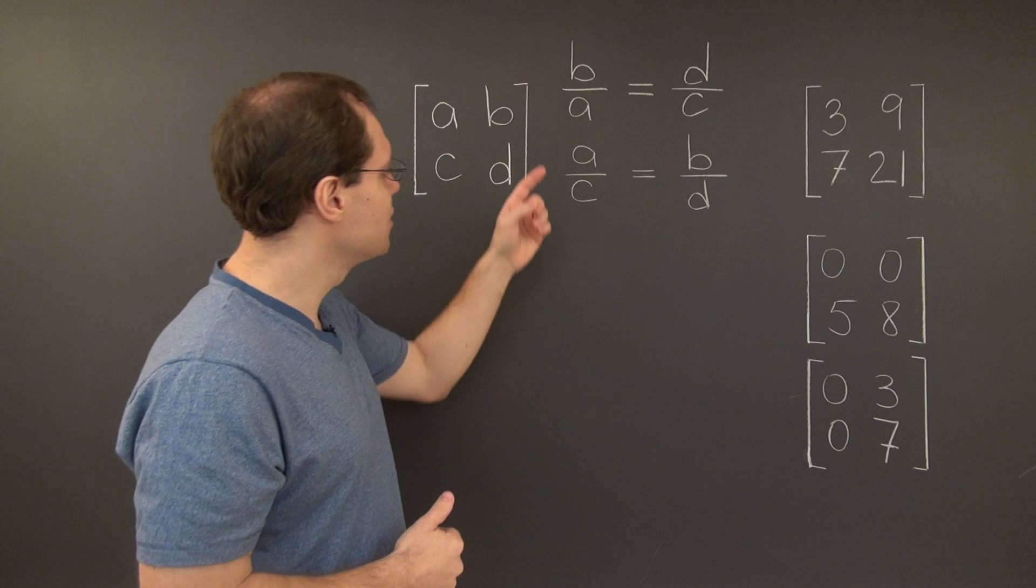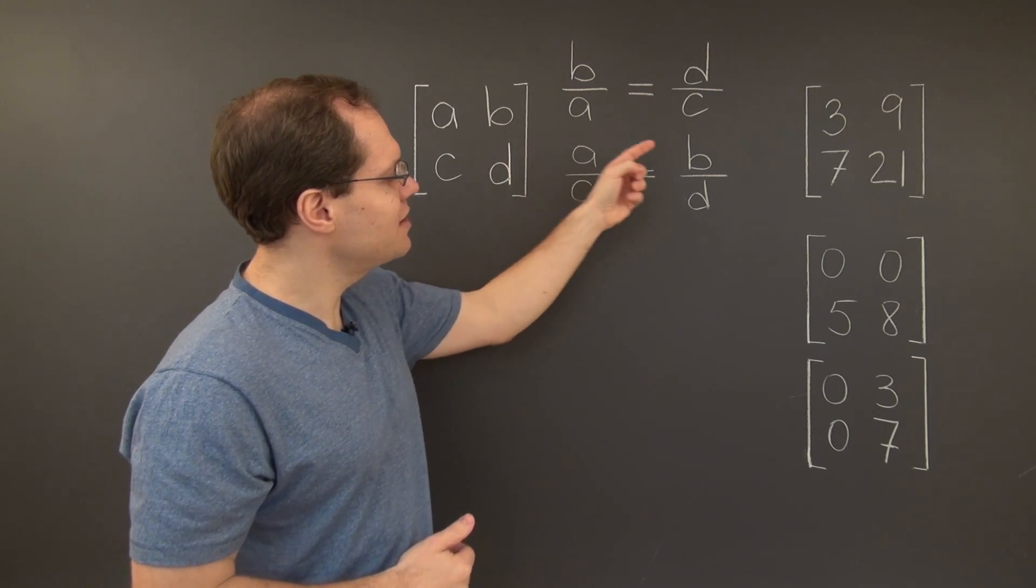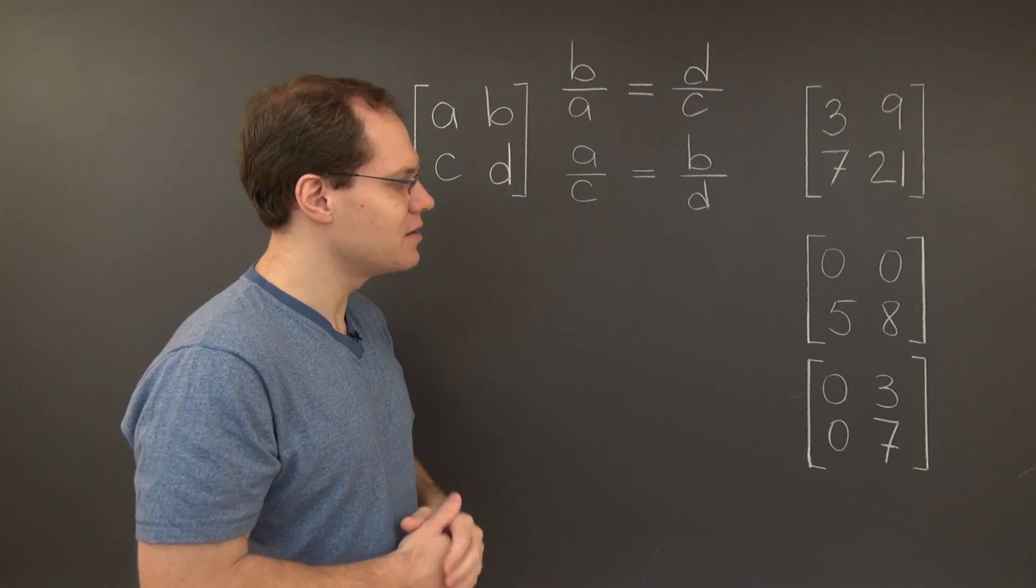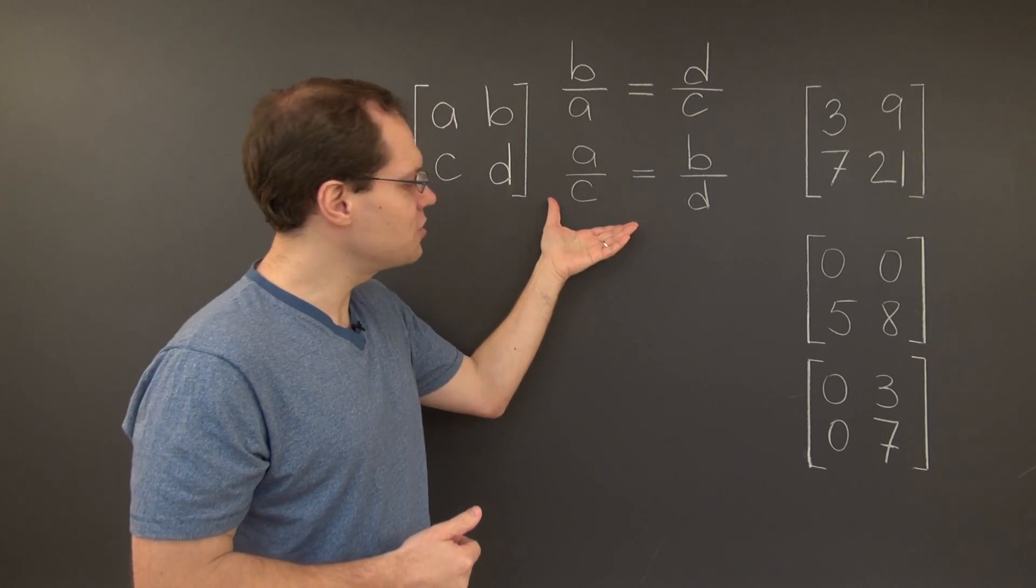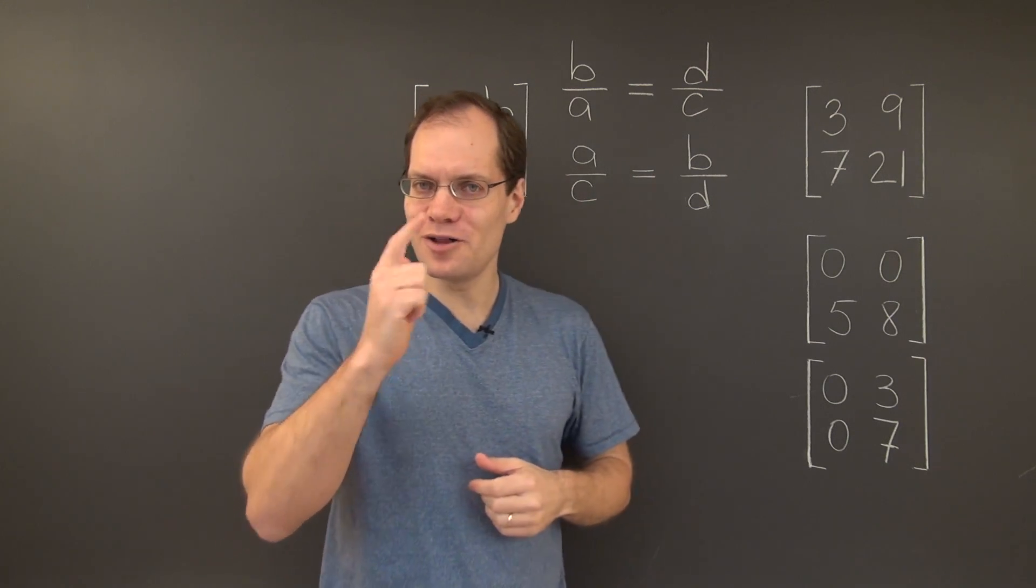In the second case, we'll have 3 over 7 equals 9 over 21, once again a match, once again the same conclusion. But both of these criteria have one small problem.